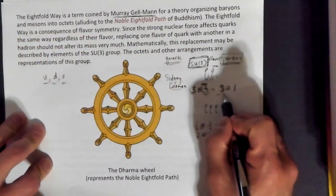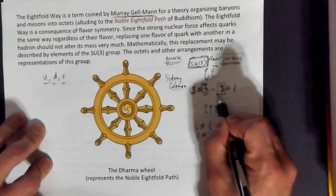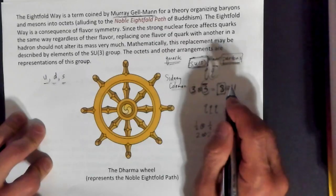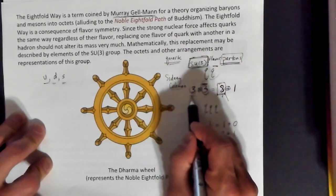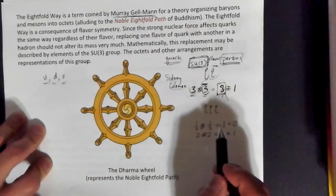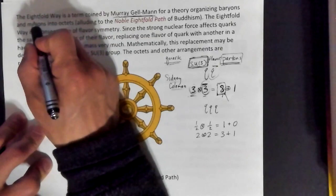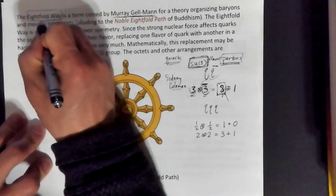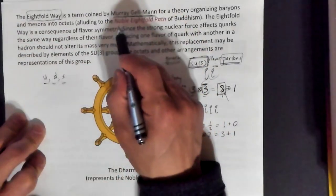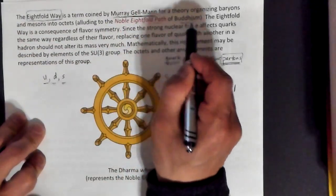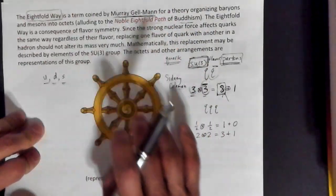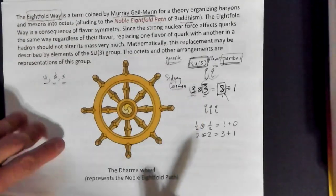Coming back to the octets — people were seeing lots of patterns of eights, and Gell-Mann had a natural description for why these eights appear: they come about from 3 × 3-bar, giving the eight-dimensional representation of SU(3). He called this the eightfold way, which also referred to the noble eightfold path of Buddhism, although the connection with Buddhism is not really all that clear — it's just the fact that eight appears in both cases.